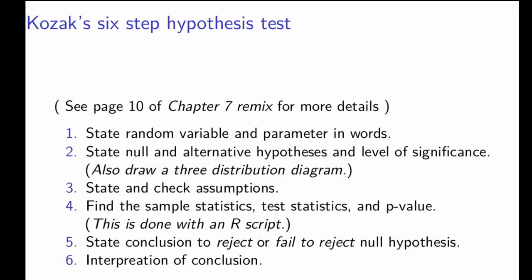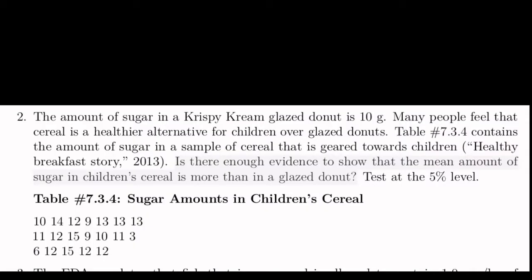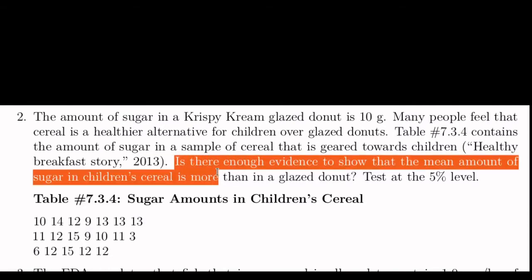We need to state the null and the alternative hypothesis. The alternative hypothesis is always the research question. In our problem, the research question is: is there enough evidence to show that the mean amount of sugar in children's cereal is more than in glazed donuts?